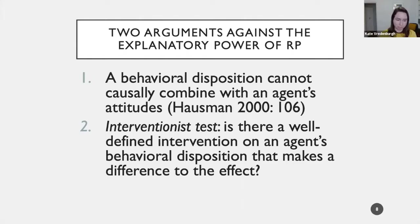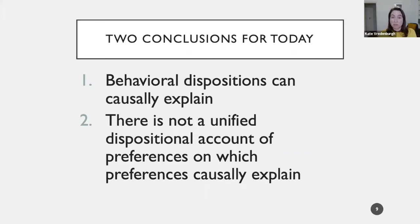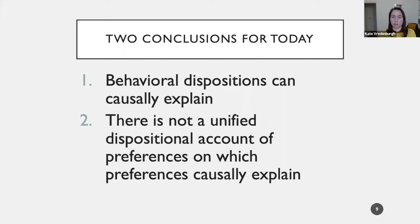I'm going to defend two separable conclusions today. First, I'll argue that behavioral dispositions can causally explain, drawing on considerations of multiple realizability. Second, I'll argue that there's not a unified dispositional account of preferences on which preferences causally explain. You might think the first argument yields some unified behavioral or non-mental disposition doing the causal explaining — broadly along the lines of a view Francesco Guala has recently defended — but I'll argue in the second half of the talk that successfully defending conclusion one shouldn't make us think we have a unified dispositional account.